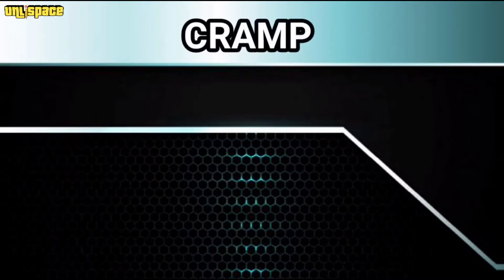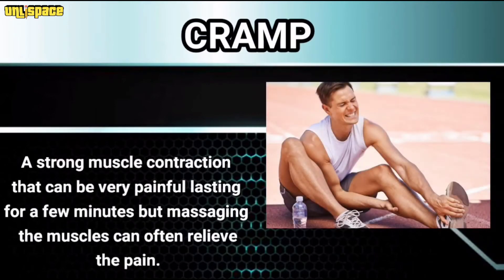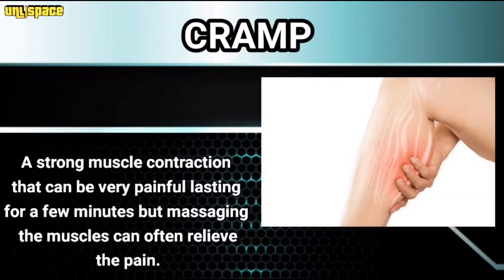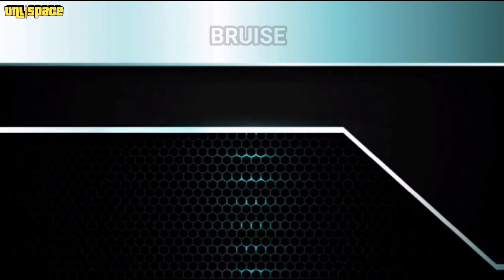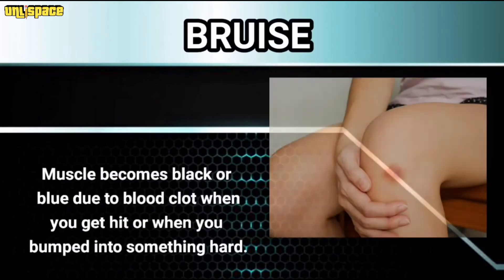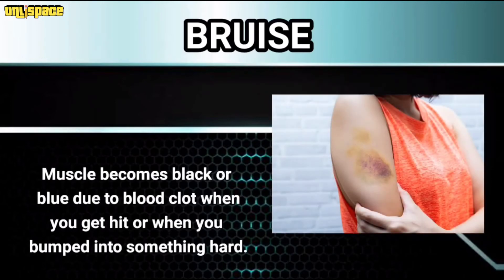Cramp: a strong muscle contraction that can be very painful, lasting for a few minutes, but massaging the muscles can often relieve the pain. Bruise: the muscle becomes black or blue due to a blood clot when you get hit or when you bump into something hard.